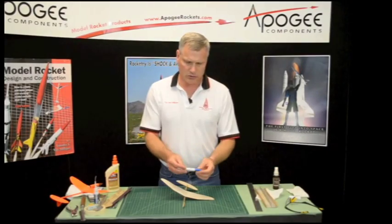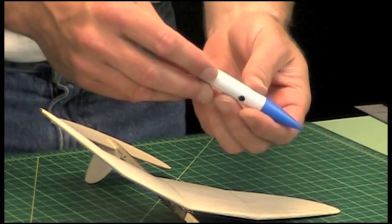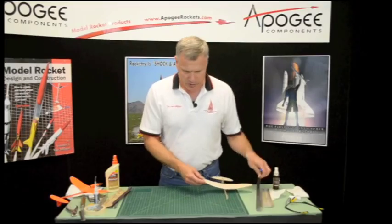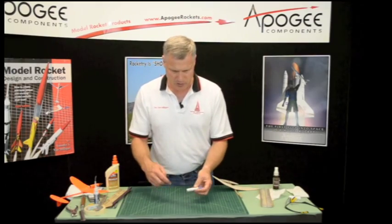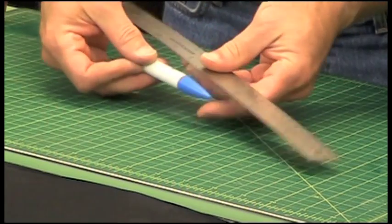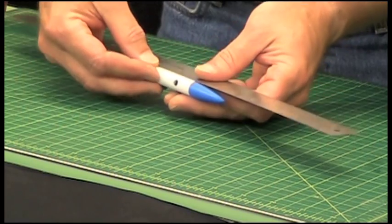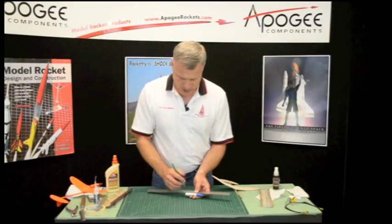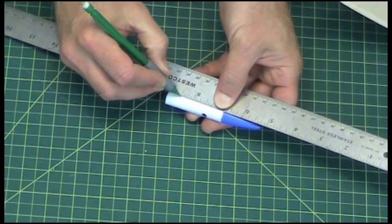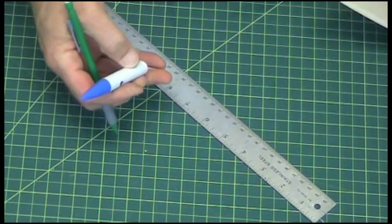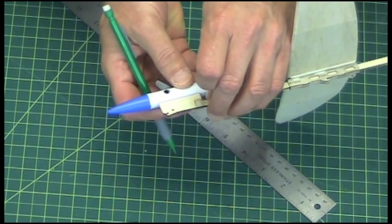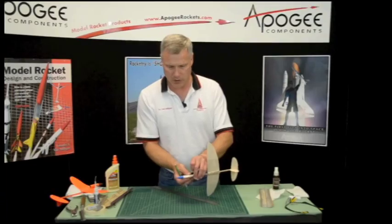Okay, now we're going to take our nose assembly that we made in the last step, and I need to put a mark on it at a half inch from the back end. So here's one half inch. This is where it gets glued to the boom, like that.